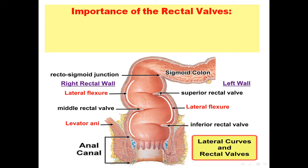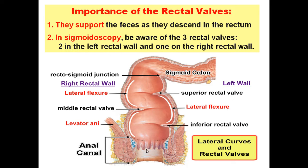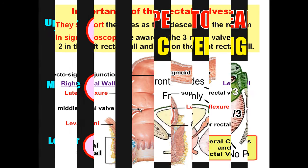Rectal valves are very important because they support the feces as they descend in the rectum, preventing early descent. The second importance is that in sigmoidoscopy, we have to be aware of the three rectal valves — two in the left rectal wall and one in the right rectal wall.